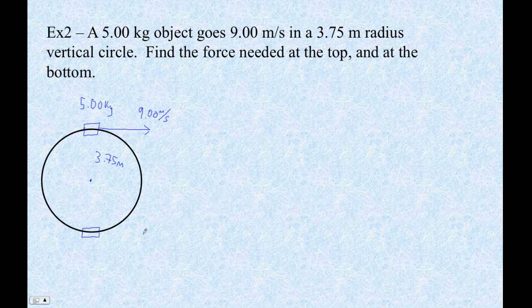The first thing I'm going to do is I'm going to figure out what my centripetal acceleration is, since I've got the velocity and the radius. Let's just do that. So that's going to be v squared over r. So that's going to be 9.00 squared divided by 3.75.